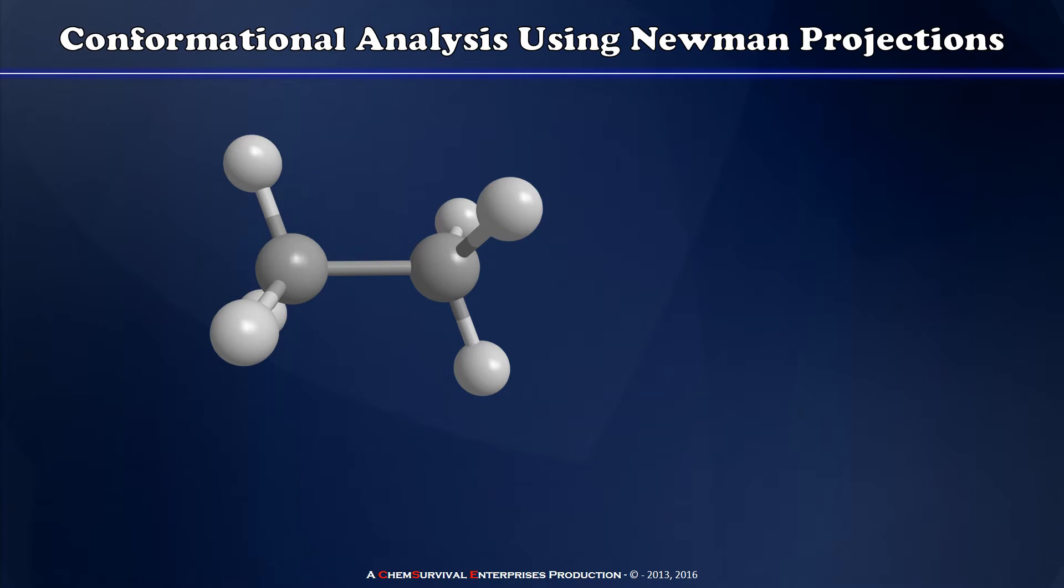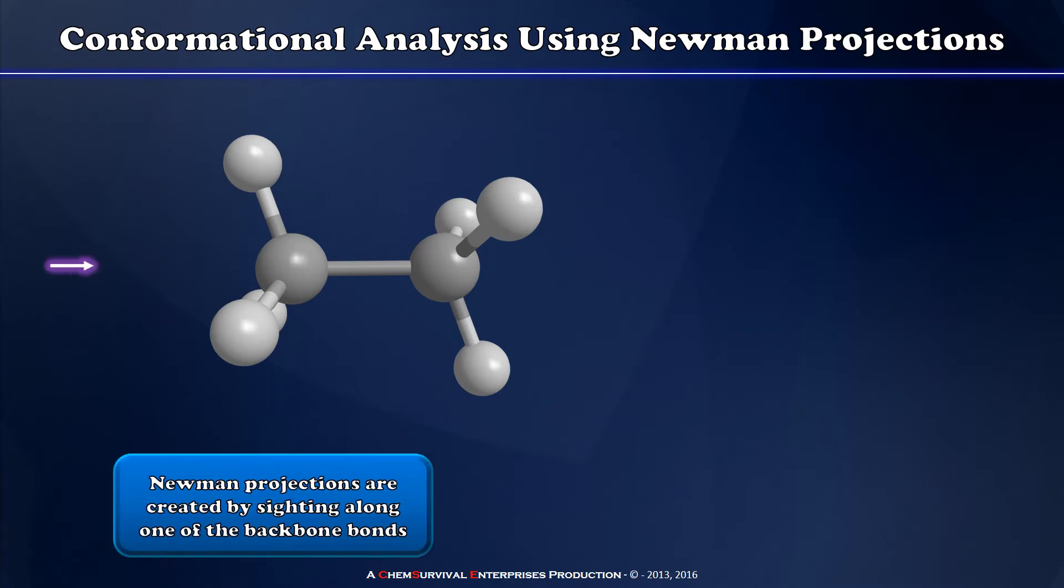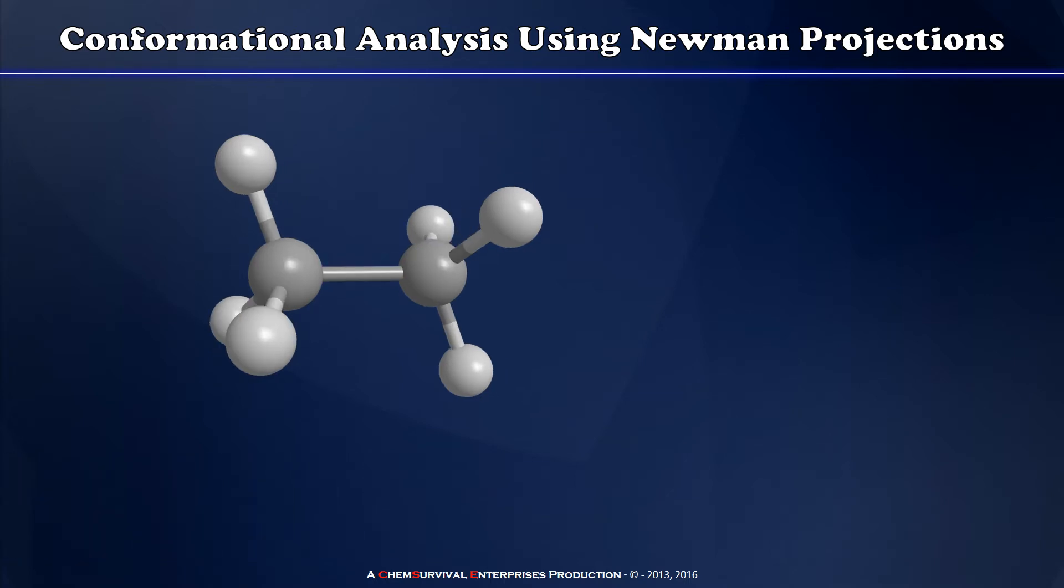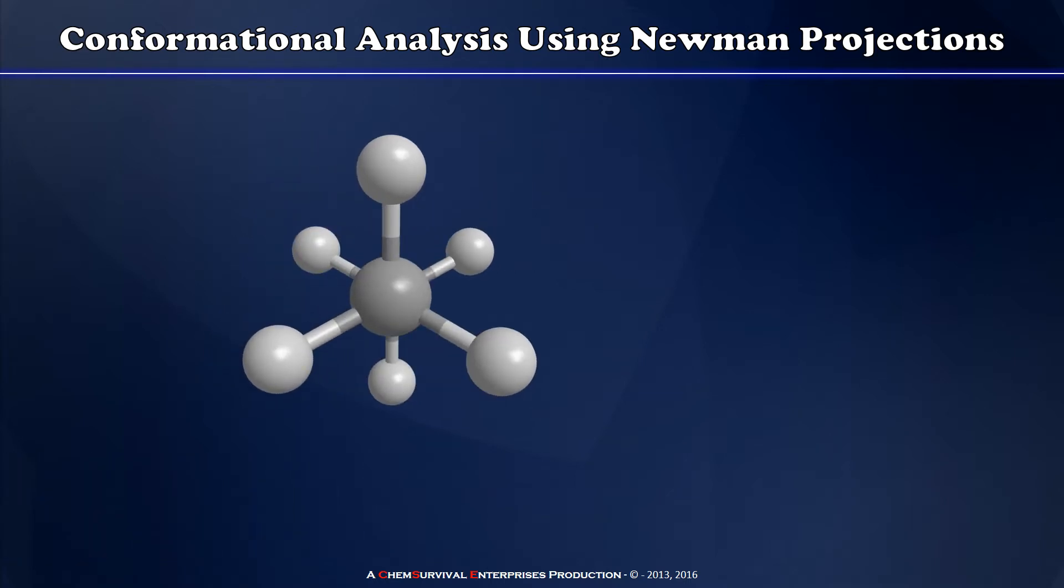But what if instead I were to sight along the carbon-carbon bond by looking down one carbon atom so the others in the back? In other words, what if I were to look at the molecule from this perspective? In this perspective it's much easier for me to see the exact angles between and among the hydrogens on adjacent carbons, and we can draw this in a shorthand version called the Newman projection.